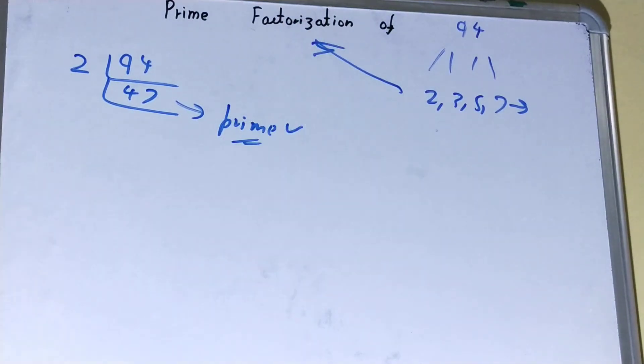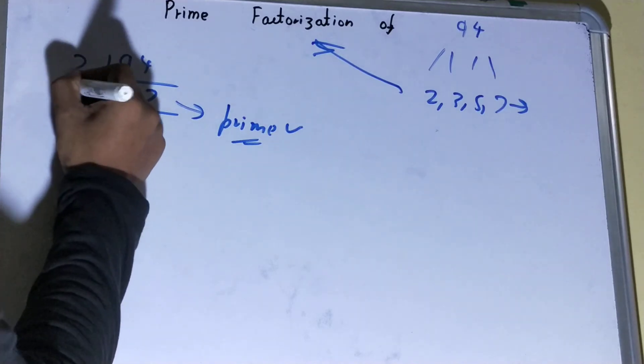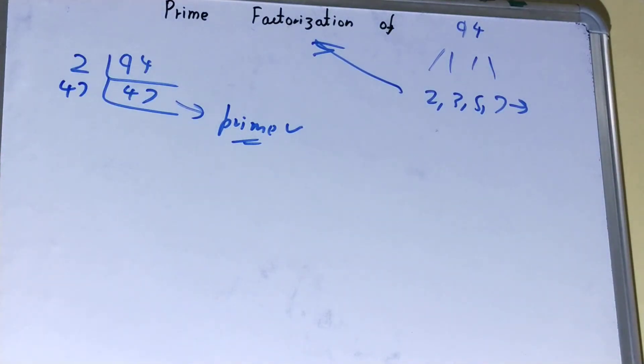If a number is prime itself, then it will not be getting divided by any other number than itself. So to divide this 47, you need the number itself. And if you keep the number itself over there, you'll get the value as 1.